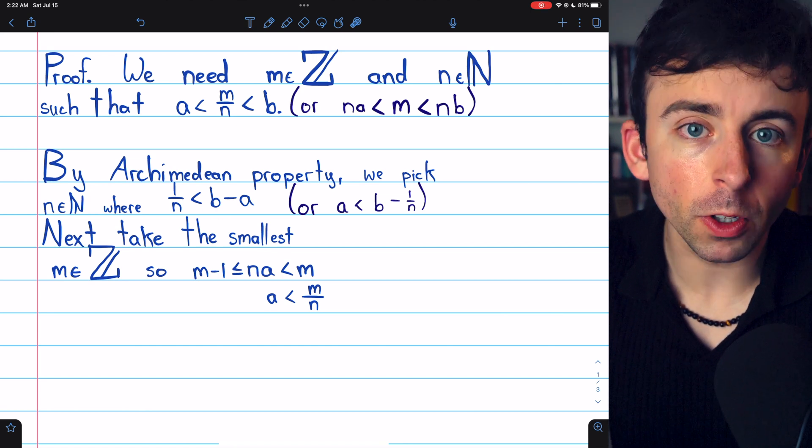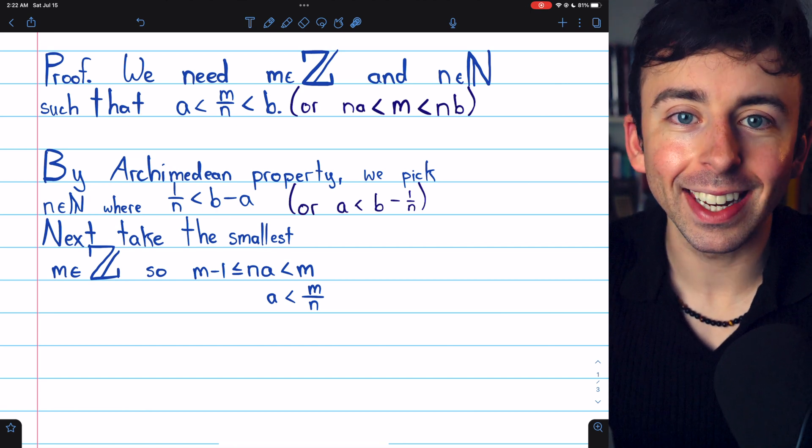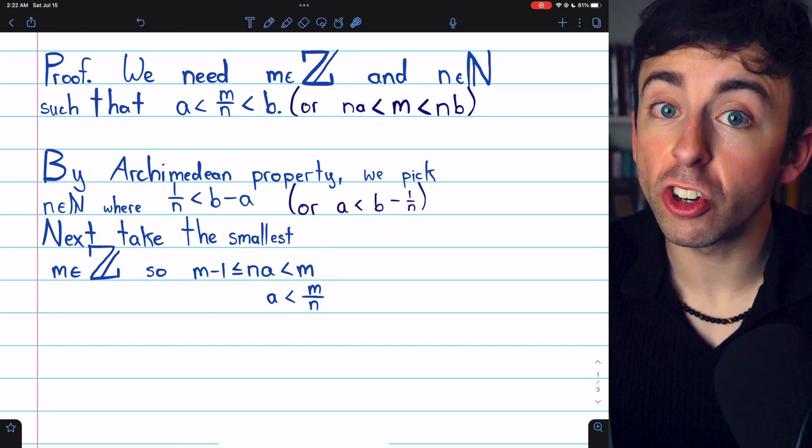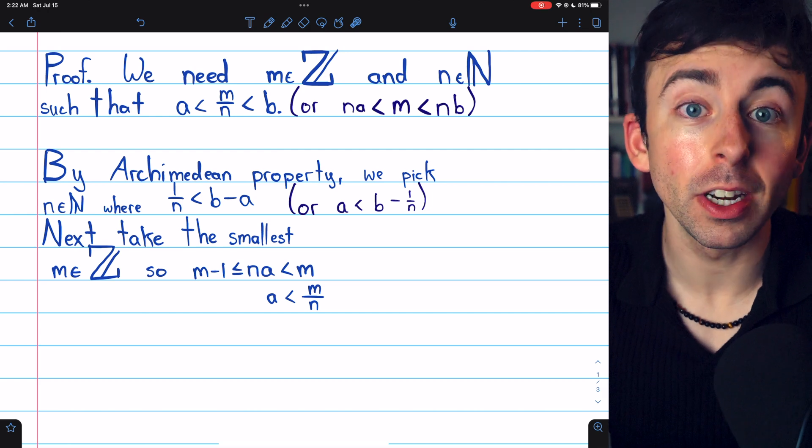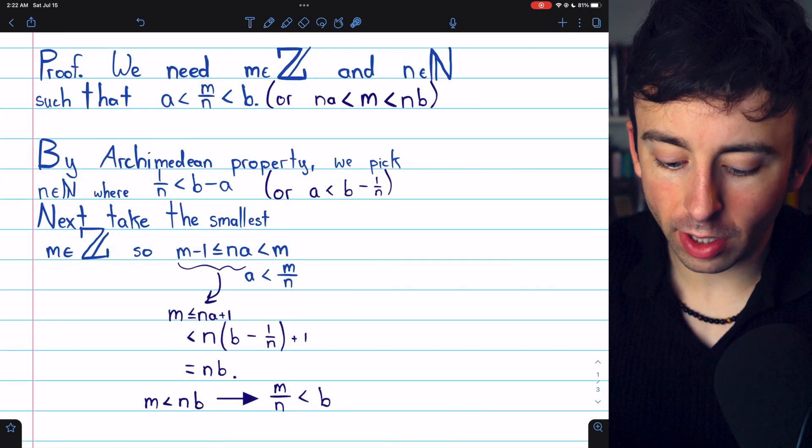If our rational number, M over N, needs to be negative, which it may, M, the integer, the numerator, is going to be negative, not N. All right, finishing this up.